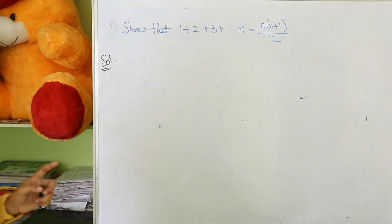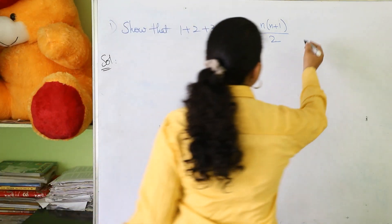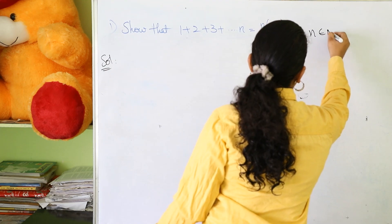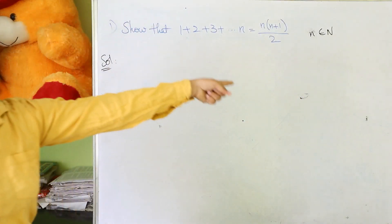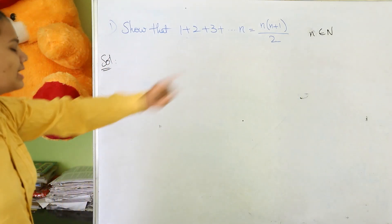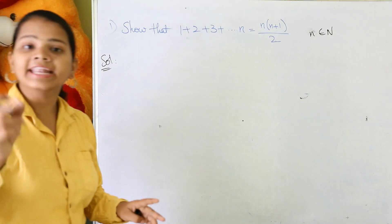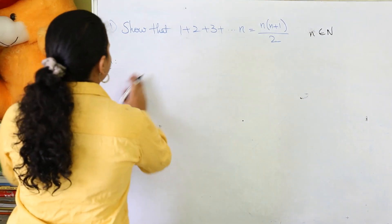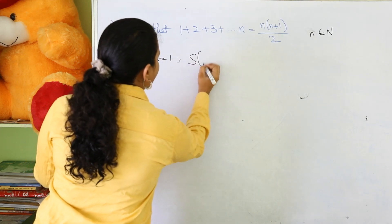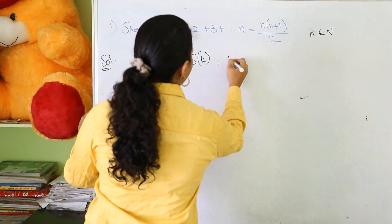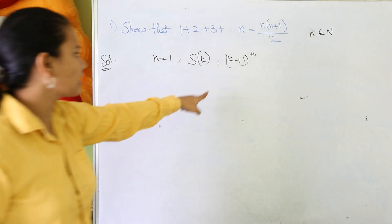In mathematical induction, you will be having 3 cases. The given question consists of where n belongs to natural numbers (small n belongs to capital N, where capital N means natural numbers). So the first case would be n equal to 1, the second case will be S of K where n equals S of K, and the third case will be K plus 1, where n equal to K plus 1.